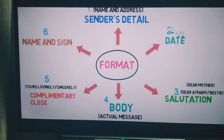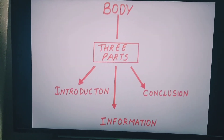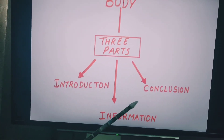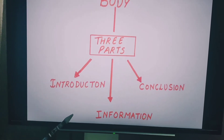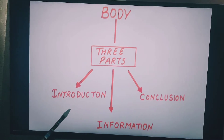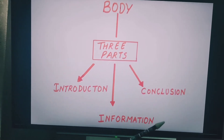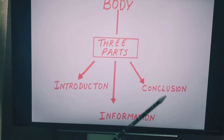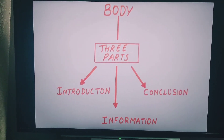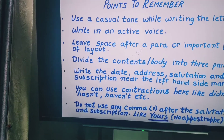The fourth step is the body. It is the main part of the letter which contains the actual message. It is usually divided into three parts: first is introduction, which states the reason for writing the letter; second is information, that gives all the information; and third is conclusion. This is the general body format of an informal letter.